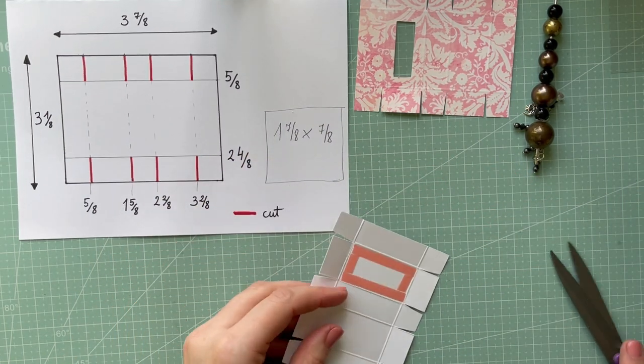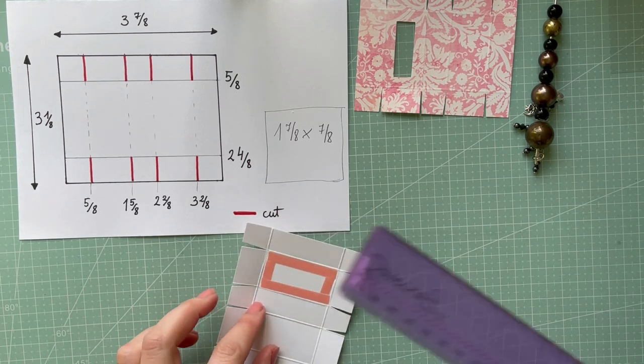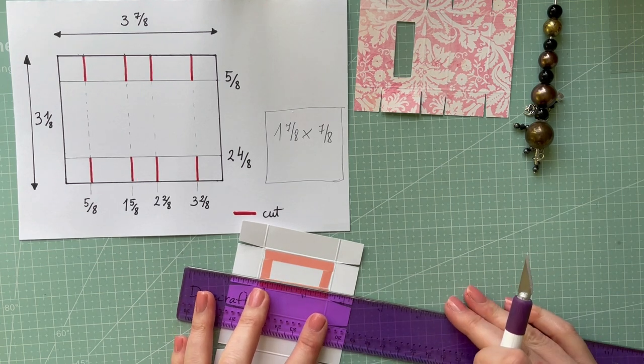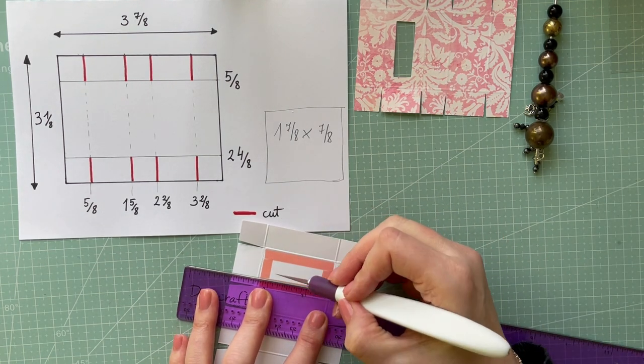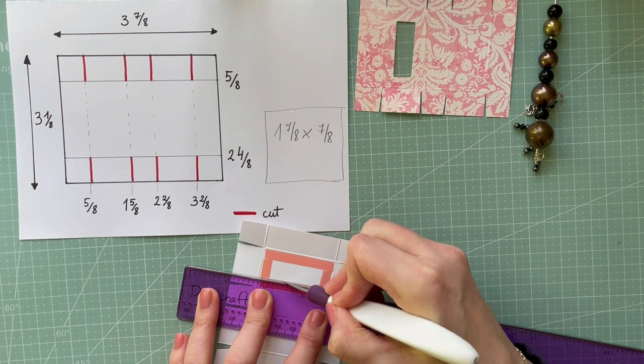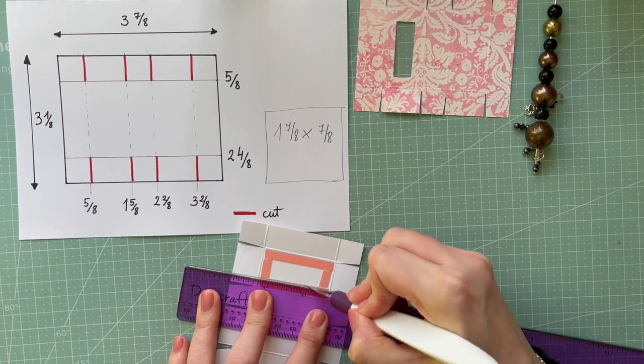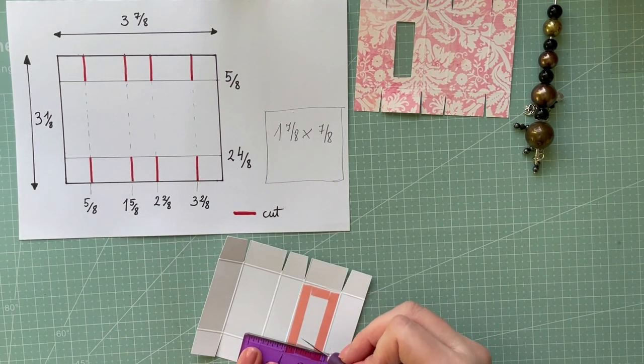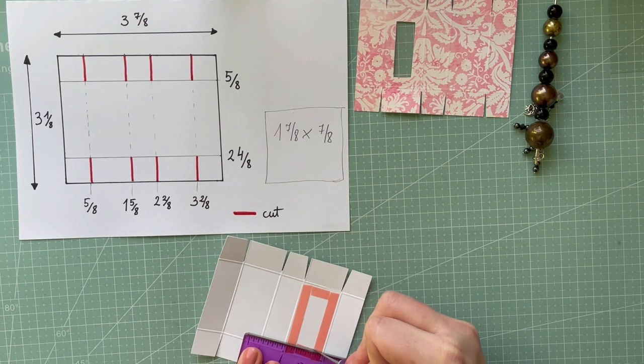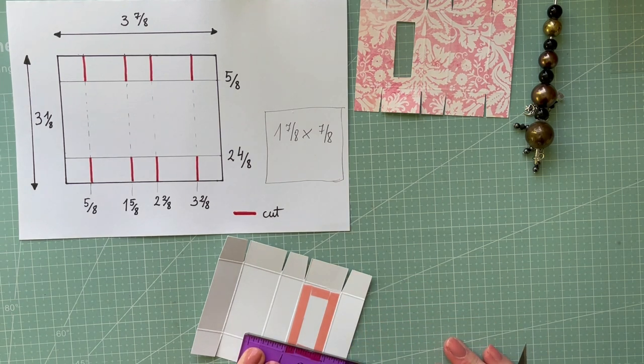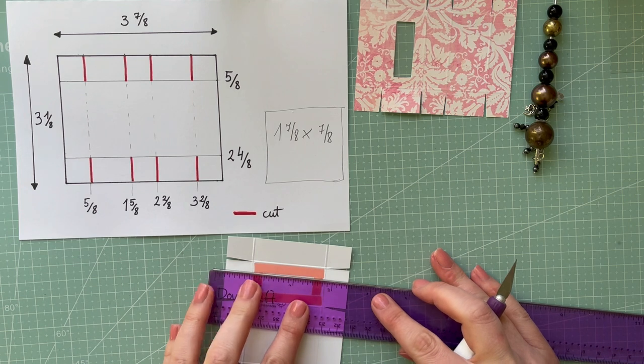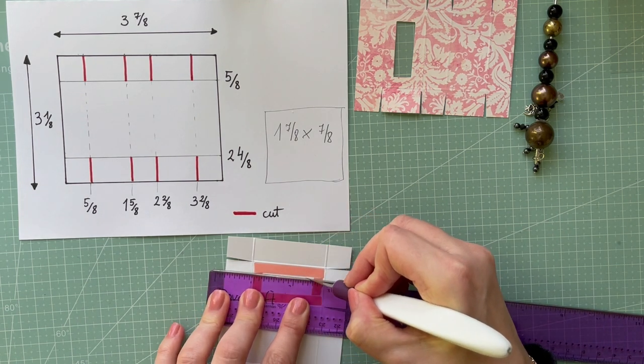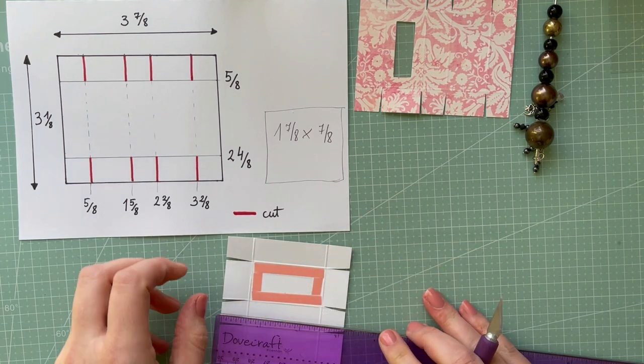Okay, so these ones are done. And then what I'm going to do, I'm going to take my ruler. You need to have a ruler which has that metal side just in case, because you don't want to cut your ruler. That's why I put my double-sided tape, because then I can actually put the ruler against it and do those cuts.